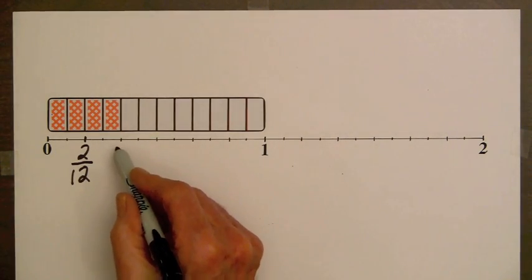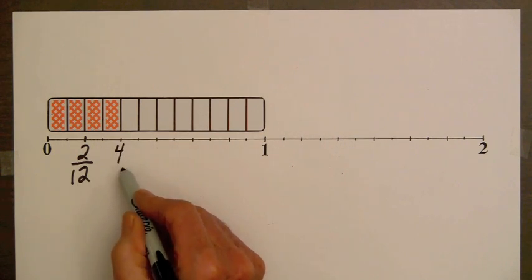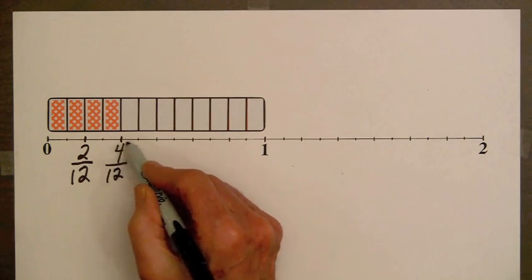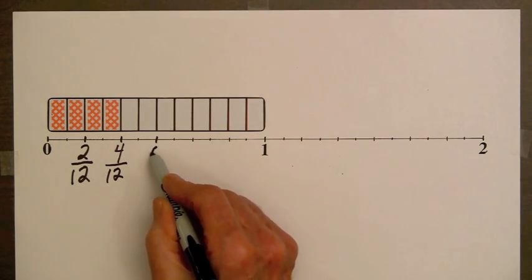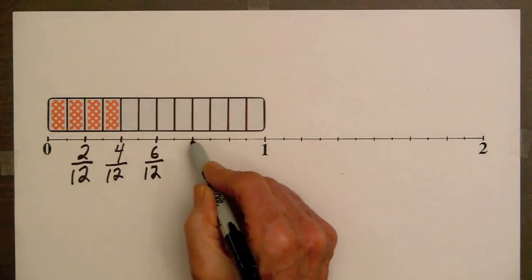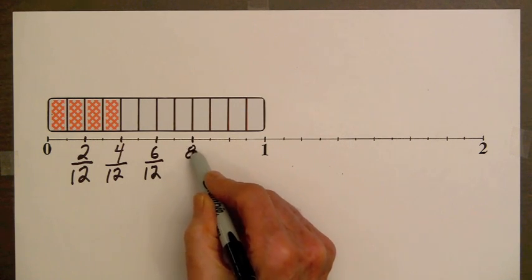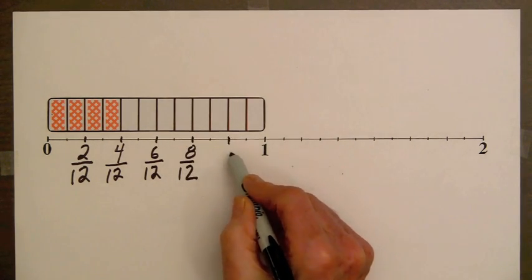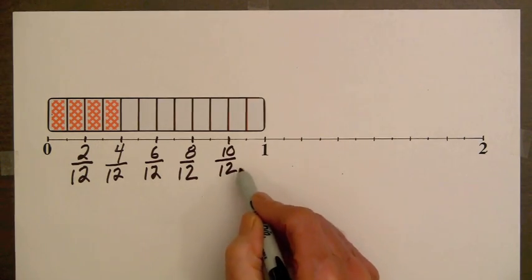We have 4 parts shaded. This is going to be the fraction 4 twelfths. And we'll just continue along here. This is going to be 6 twelfths. We'll do every other mark here. This is 8 twelfths. 10 twelfths.